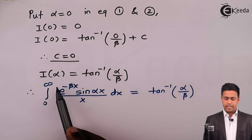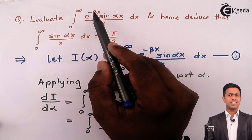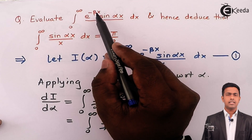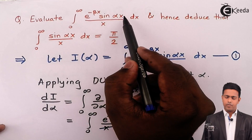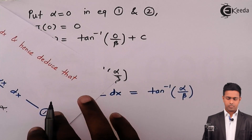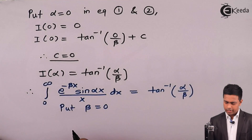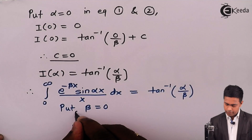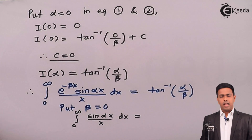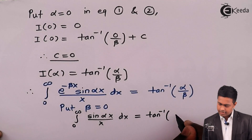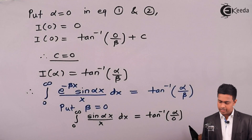To prove the deduction, if we compare this integral with our target integral, the target does not have the e raised to minus beta x term. To remove that term we put beta as 0: e raised to 0 is 1, so we get sin(alpha x) upon x. Putting beta equals 0 on the right hand side gives alpha by 0, which becomes infinity, and tan inverse of infinity equals pi by 2.